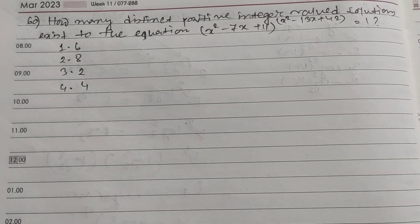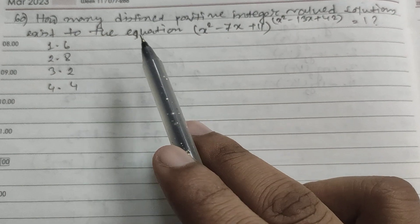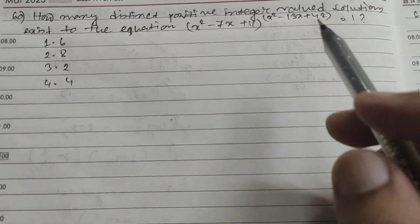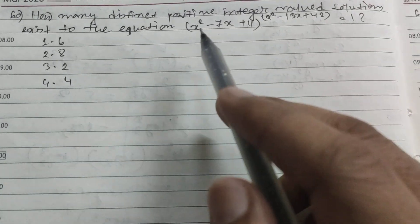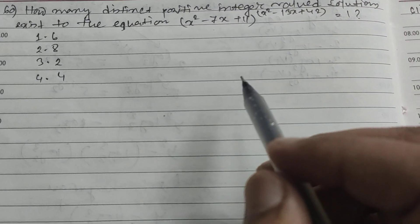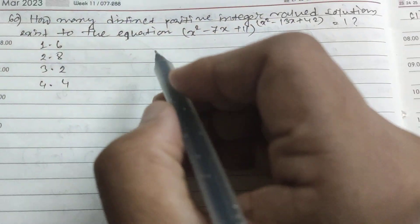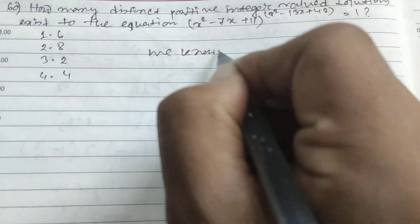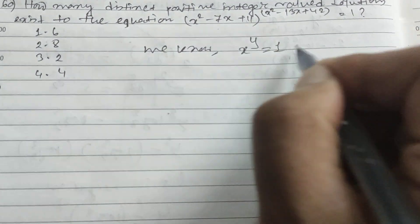Hi friends and students, this is question number 60. The question is: how many distinct positive integer valued solutions exist to the equation (x² - 7x + 11)^(x² - 13x + 42) = 1? So we know that if x to the power y equals 1, there are specific cases to consider.